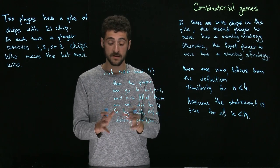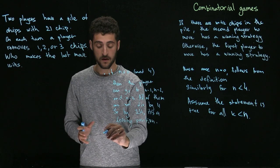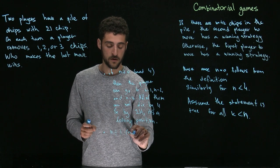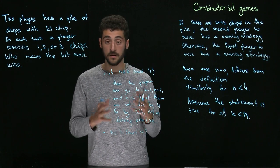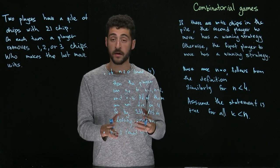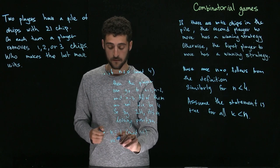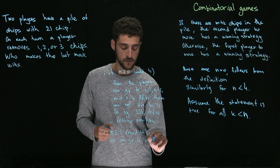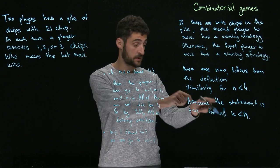Okay, let's consider the case when n is equal to 1 modulo 4. However, in this case we can go to n minus 1, which is a losing position by the induction hypothesis.